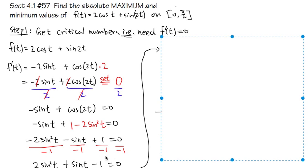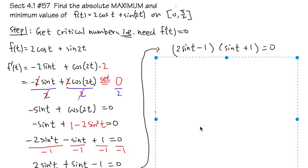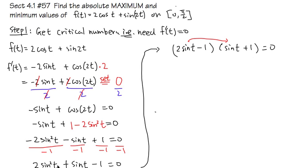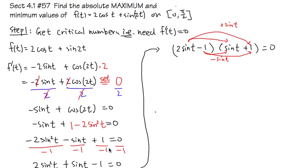We factor this quadratic equation. It factors as (2sin(t) - 1)(sin(t) + 1) = 0. We can verify: multiplying gives 2sin²(t), then 2sin(t) times 1 minus sin(t) gives +sin(t), and finally -1 times 1 gives -1. So this is the correct factoring.